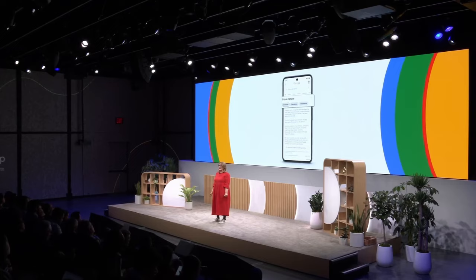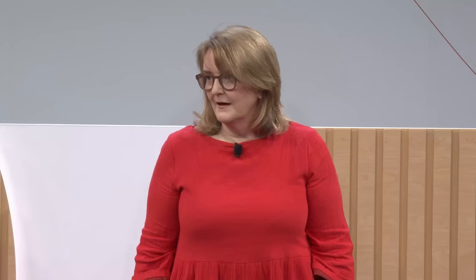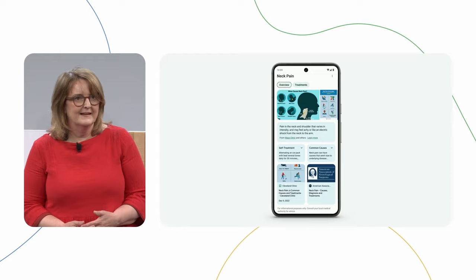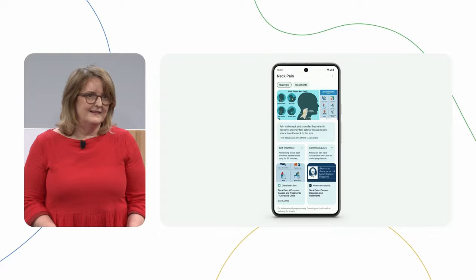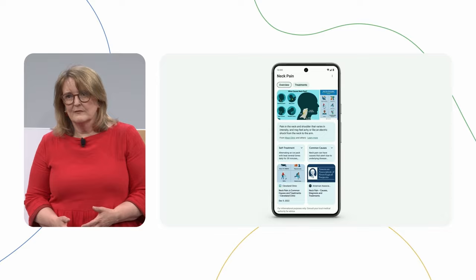We're also continuing the work we've prioritized for many years to surface trustworthy health information globally. That's why we've partnered with the WHO to add authoritative information in knowledge panels in more countries and in more languages. With this expansion, knowledge panels on search can now provide people with helpful information on dozens of conditions, from the common cold to colon cancer. We've added knowledge panels across more than 80 countries. Another part of making health information accessible is presenting it in formats people can easily understand. We've been making the experience more visual on mobile devices, adding images and diagrams from high quality sources that make it easier to understand symptoms.